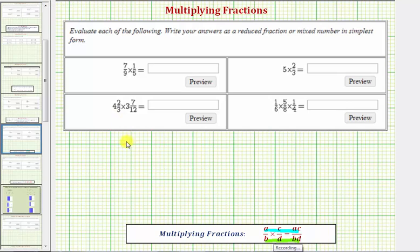So looking at our first example, we have seven-ninths times one-fifth. Notice in this case, there are no common factors between the numerators and denominators, and therefore, we multiply seven times one is seven, nine times five equals forty-five. So seven-ninths times one-fifth is seven-forty-fifths.